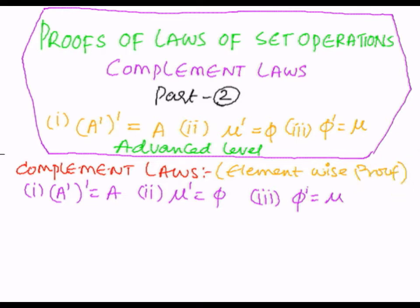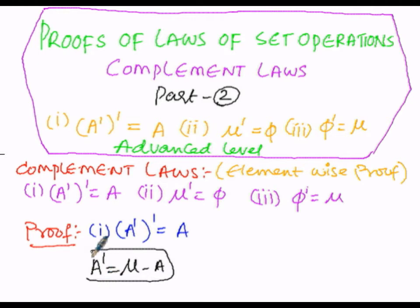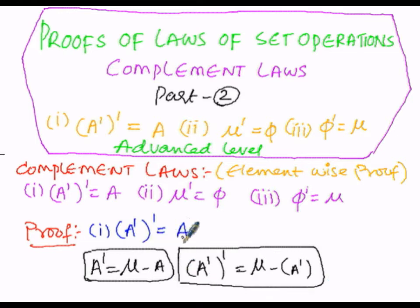We are going to prove the first one. Case 1: (A')' = A. We must know the two formulae — A complement is given by μ minus A. When we find the complement of A', it must be subtracted from the universal set. So (A')' = μ minus A'. Based upon these two conditions we are going to prove (A')' = A by means of element-wise proof.